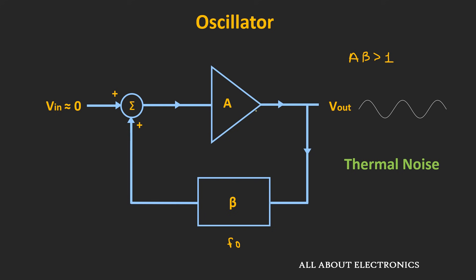Once this signal reaches a certain voltage, the loop gain of the circuit will become 1. This is possible because of the nonlinear behavior of either the amplifier or the feedback circuit. In this way, the noise signal of the desired frequency builds up over time, and once it reaches a finite voltage, the loop gain becomes 1 and we get sustained oscillations at the output. This is the basic working principle of the oscillator.